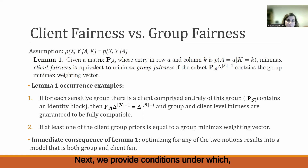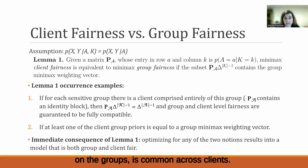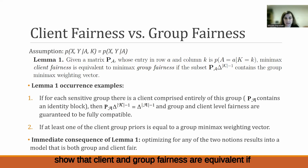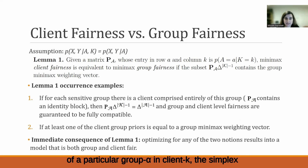Next, we provide conditions under which group fairness and client fairness are equivalent. To do so, we assume that the distribution of the input and target variables conditioned on the groups is common across clients. However, our modeling assumptions still allow for the distribution of the demographics to depend on the client, meaning we still allow clients to have high, low, or no representation of particular demographics. We show that client and group fairness are equivalent if, given a matrix whose entry denotes the prior of a particular group A in client K, the simplex subset contains the minimax weighting vector.